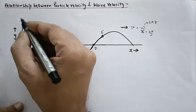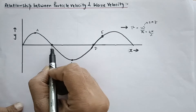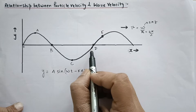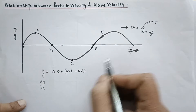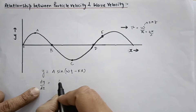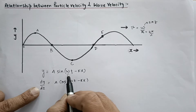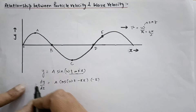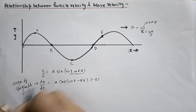To find the slope - change in y upon change in x - x represents the position of the particle. So dy by dx, treating t as constant, gives: A cos(omega t minus kx) times the differentiation of the inside part, which is minus k. So the slope of the graph is minus Ak cos(omega t minus kx).